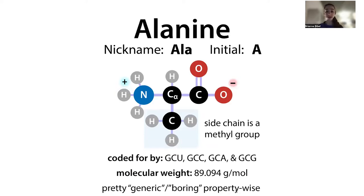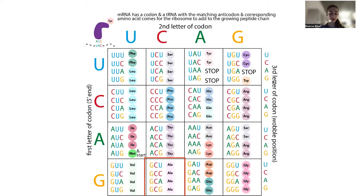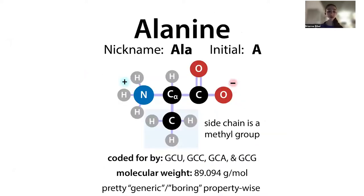Alanine is coded for by codons starting with GC - GCU, GCC, GCA. Each amino acid's placement in a protein is encoded by three-letter codons in messenger RNA. If your codon starts with GC, it's going to be an alanine.